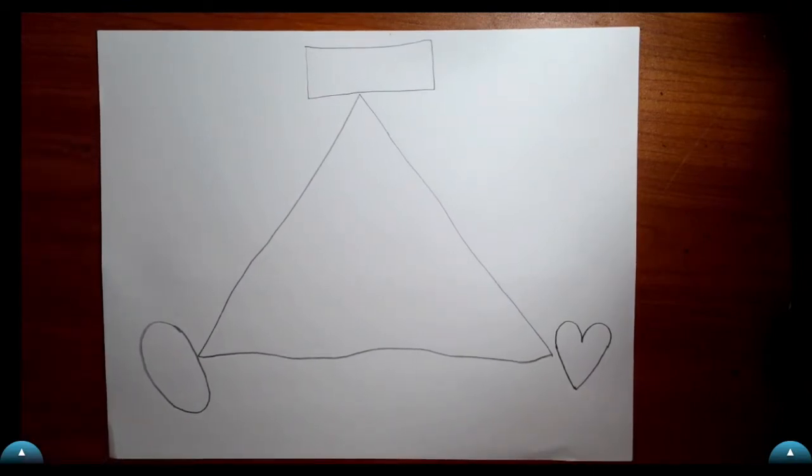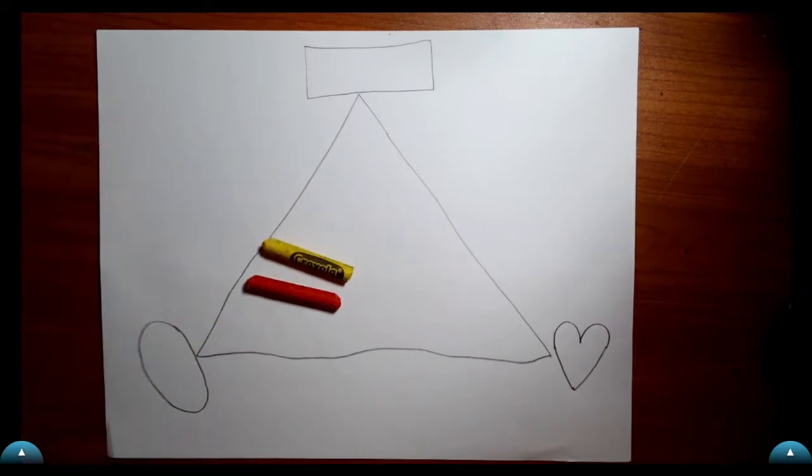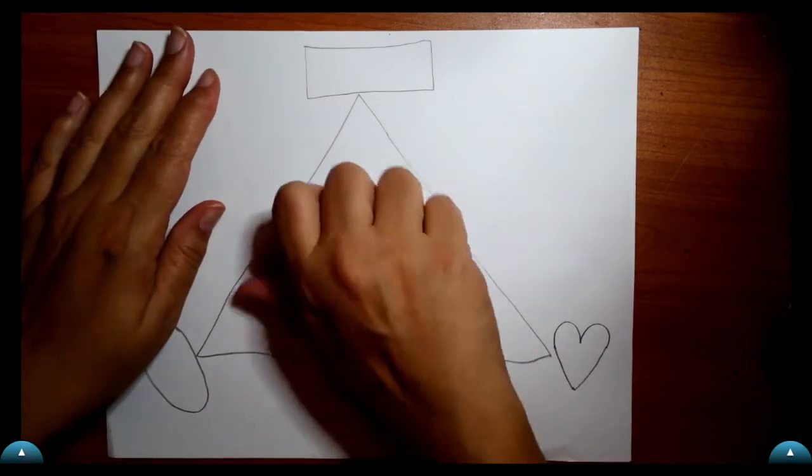So each point of my triangle I have one shape. Now we're going to get our primary colors. Red, yellow, and blue.